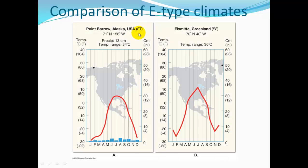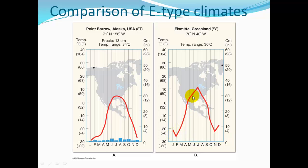Comparing E climate types: Point Barrow, Alaska is an ET climate with quite a temperature range, never really getting much over 30 degrees Fahrenheit in summer and very little precipitation. Greenland is an EF climate with no precipitation, extremely arid conditions, and extremely variable temperatures.